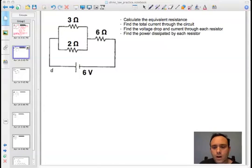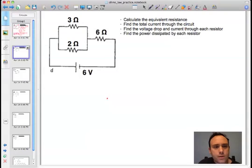Hey, what's up? Mr. Love here. We have another circuits problem, looking at a compound circuit. We're going to go ahead and analyze the various parts. We're going to look at the parallel and series parts of this circuit and try to find the equivalent resistance, the total current through the circuit, the voltage drop across each of the resistors, the current through each resistor, and the power dissipated by each resistor.